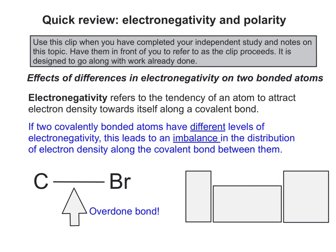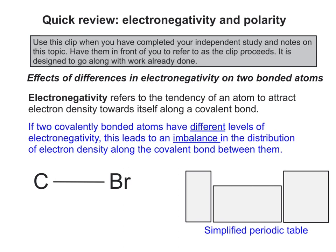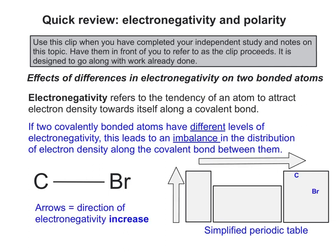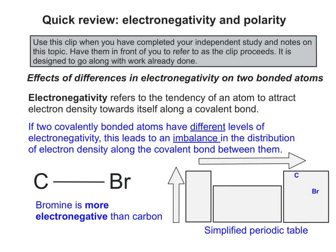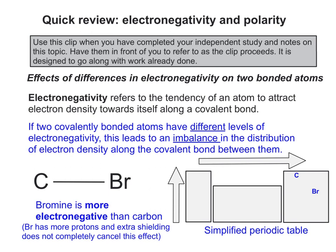The three squares or rectangles represent the periodic table. Thinking back to the trends in electronegativity and deciding where carbon and bromine actually sit — and remembering that the arrows indicate the direction of electronegativity increase — it's quite easy to work out that bromine is more electronegative than carbon. This means the shared electron pair will sit a bit closer to bromine than it does to carbon.